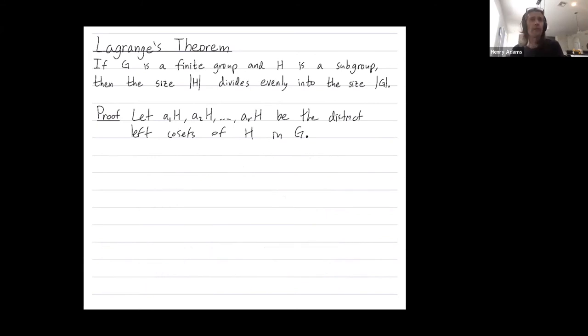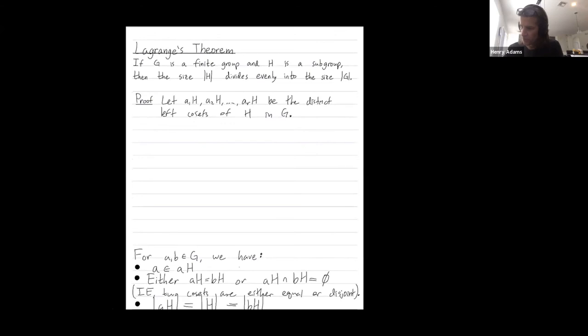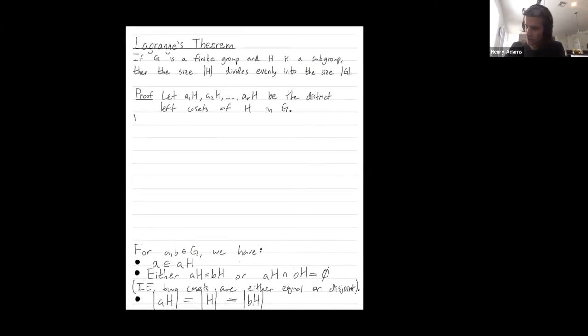All right. So here are our properties about cosets. So we're going to apply these three bullets. So by the first bullet, I can claim that G is the union of all of its cosets.